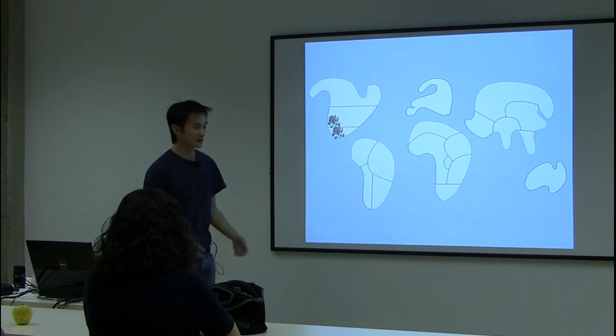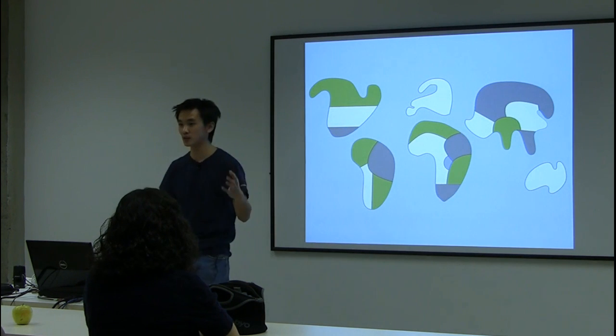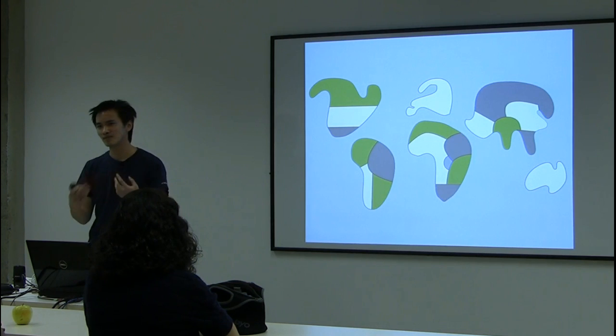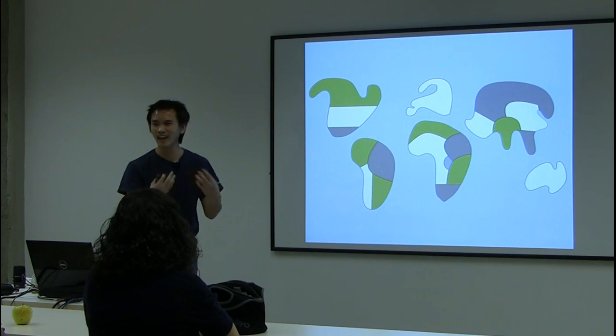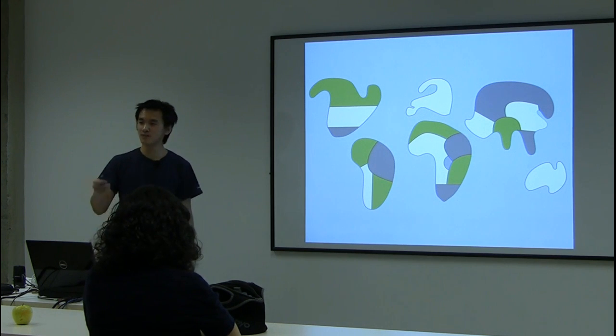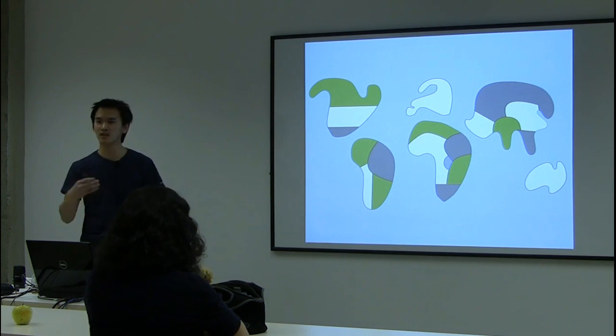So if you take this map, you can try to color it and you'll find out that with four colors you can actually color this map. It seems to be kind of a law, it seems like any map could actually be colored with four colors, and this has been conjectured in the 1850s.